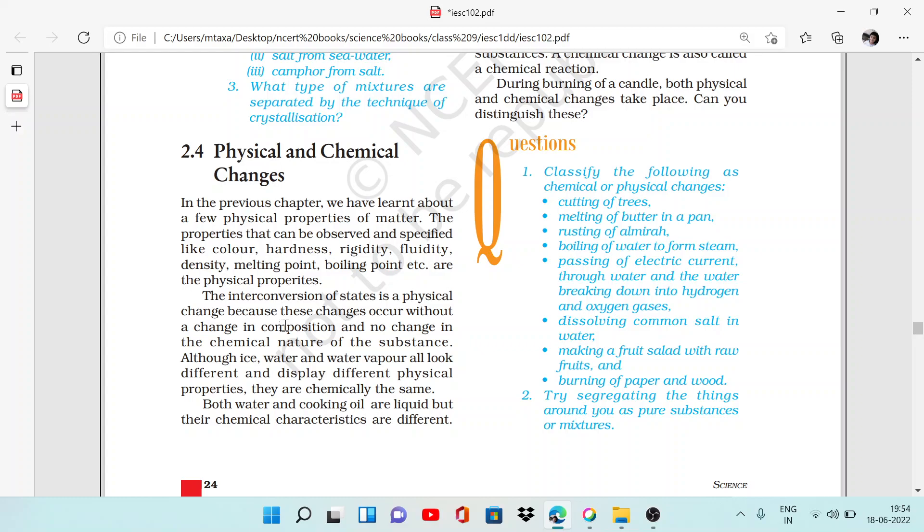Very good evening all of you. In this video we will do physical and chemical changes. What we have seen in the first chapter? We have explained that there are physical properties like metal, color, hardness, fluidity, and density.